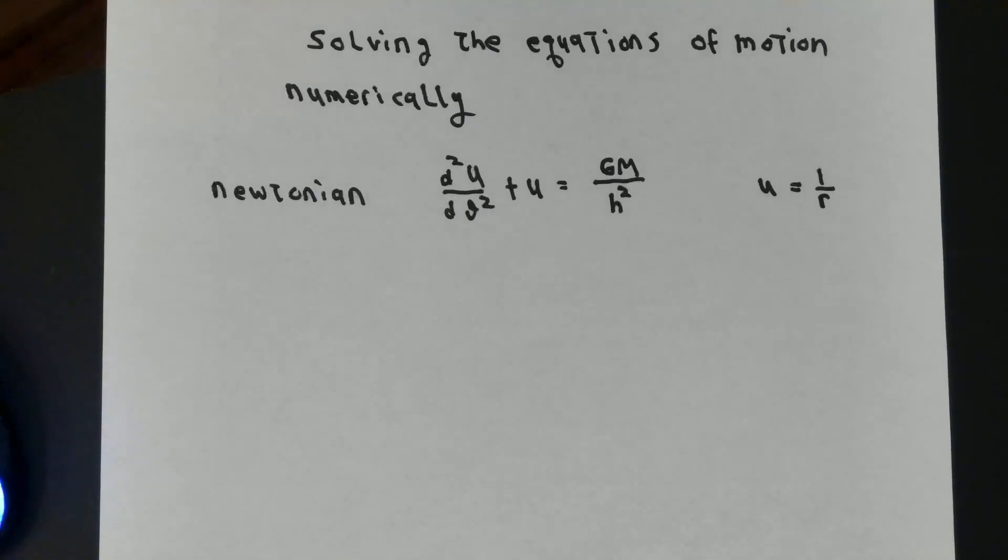If we set up our coordinate system so that the perihelion, the closest point in the orbit to the origin, is at theta equals zero, that simplifies considerably. In what follows, we will assume that we've done that already.